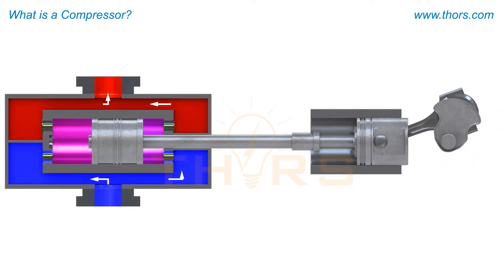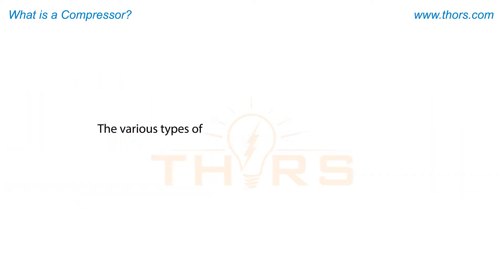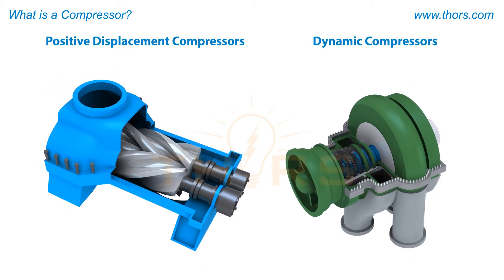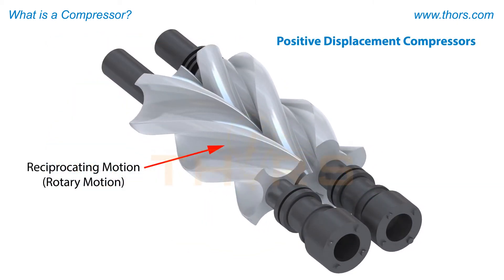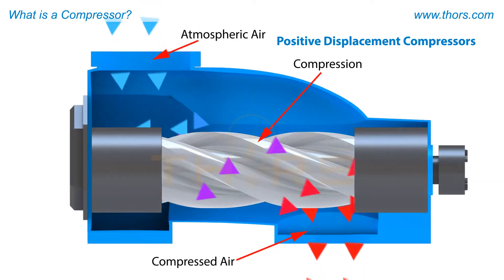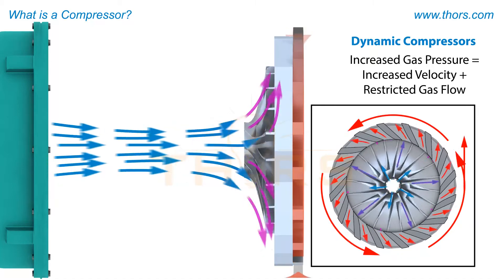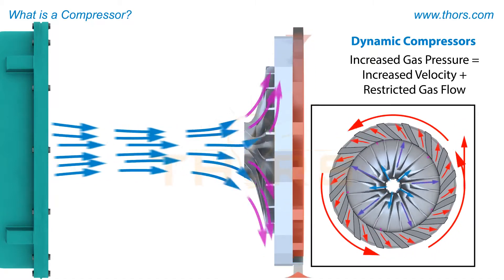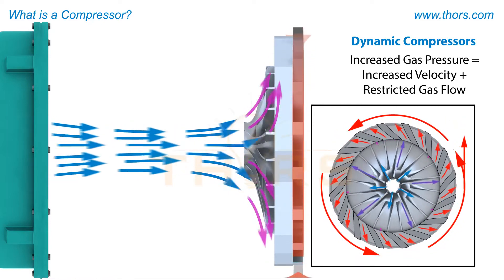More advanced compressors operate in a similar fashion. The various types of compressors can be classified as either positive displacement compressors or dynamic compressors. Positive displacement compressors will either use reciprocating motion or rotary motion to produce compressed air. Dynamic compression increases gas pressure by increasing the velocity of a gas and then restricting the gas flow by passing it through a diffuser. Reducing a gas's velocity causes the gas's pressure to increase.